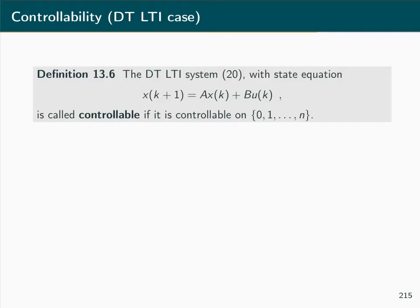Knowing that if a discrete time linear time invariant system is controllable on the interval from 0 to n it will be controllable on any longer interval, we state definition 13.6: the system is simply called controllable if it is controllable on the time interval from 0 to n. Omitting the time interval implicitly means controllability on the interval from 0 to n.